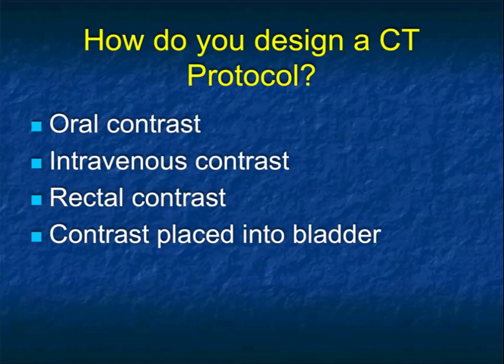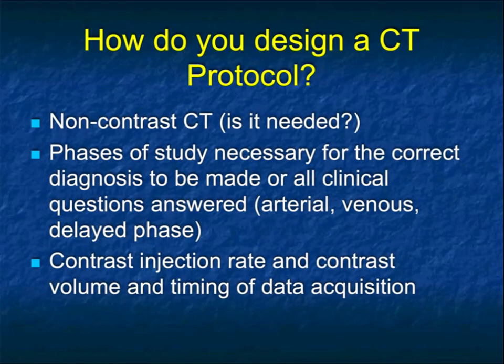Everything revolves around protocols, and protocols start with contrast — oral, IV, rectal, or contrast placed in the bladder. When designing protocols, if you're giving contrast, do you also do a non-contrast CT? Non-contrast CTs are critical when evaluating a renal mass, but you don't need them for pancreas or liver studies. The question then is how many phases do you need — the fewer phases the better, as there's less dose to the patient.